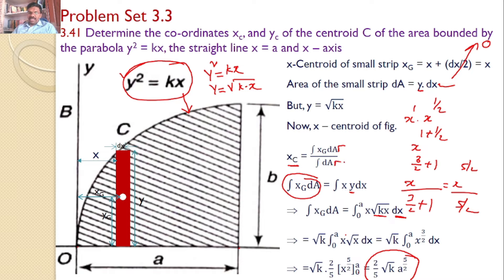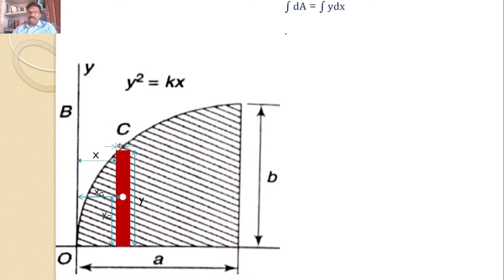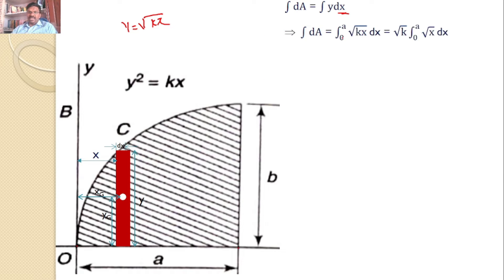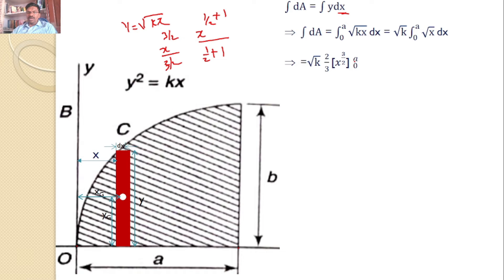Now calculate ∫dA where dA = y·dx. Substituting y = √(kx): ∫₀ᵃ √(kx)·dx = √k · ∫₀ᵃ x^(1/2)·dx. Integrating: x^(1/2 + 1) / (1/2 + 1) = x^(3/2) / (3/2), giving (2/3)·x^(3/2). Evaluated from 0 to a: ∫dA = (2/3)·√k·a^(3/2).